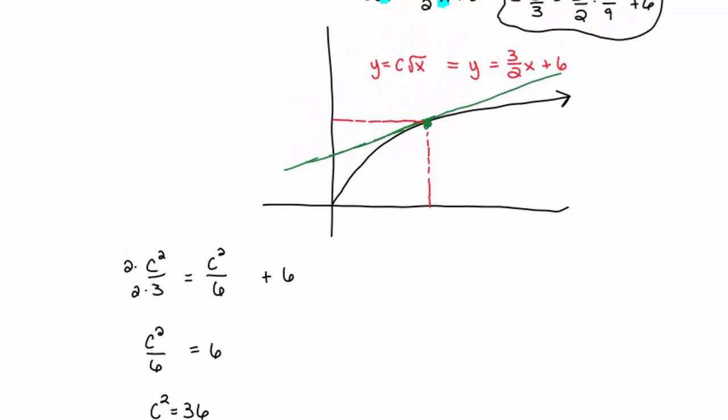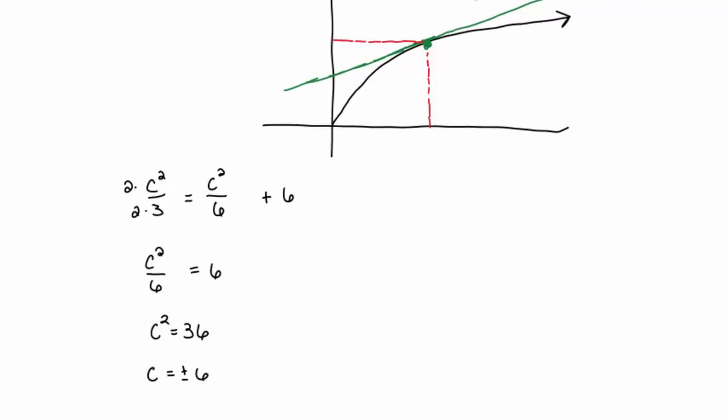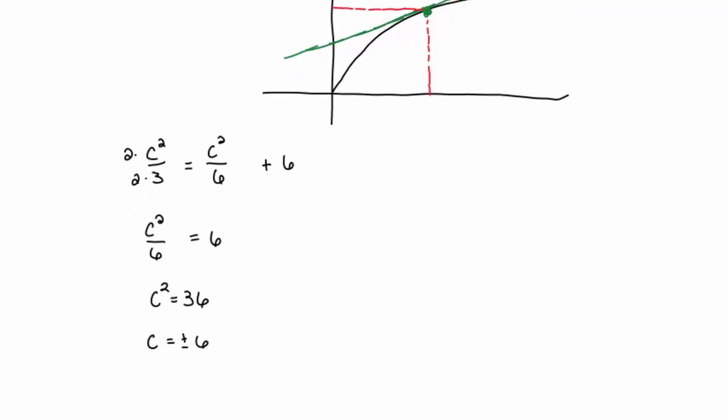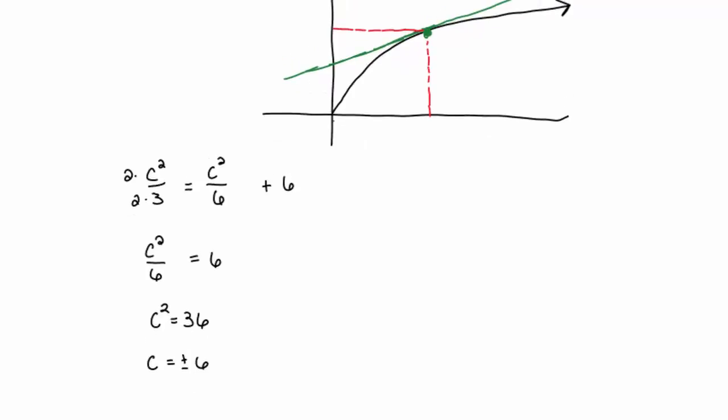So, let's go ahead and just experiment or talk about the possibility that c could be negative. If c were negative, that means the graph would look like this. It's the upside down square root function.